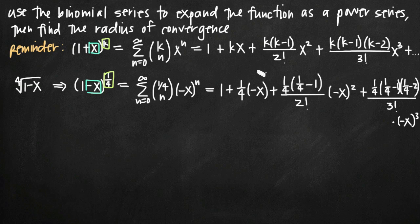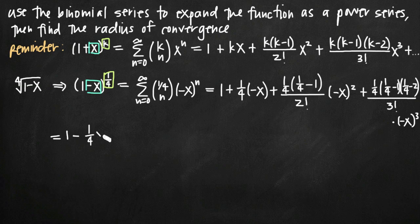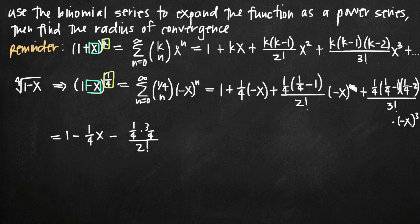We want to go ahead and simplify these terms so we can more clearly see a pattern. When we recognize that pattern, we can represent it as a power series. Simplifying: we have 1 for the first term, then plus 1/4 times negative x which is minus 1/4 x. For the third term, we have 1/4 times (1/4 minus 1). Since 1/4 minus 1 is negative 3/4, we get minus (1/4 times 3/4) all divided by 2 factorial. Since (negative x) squared loses the negative, we're left with x squared.